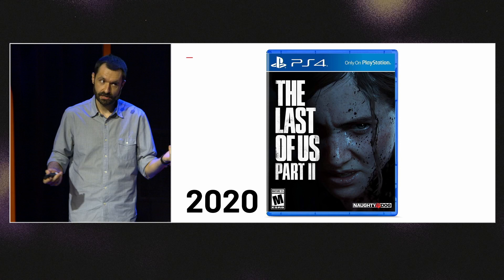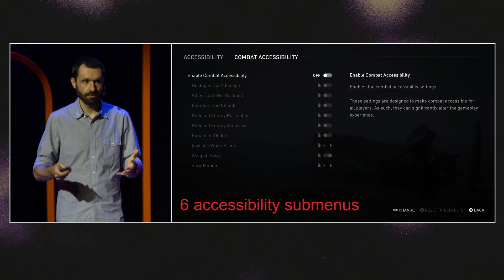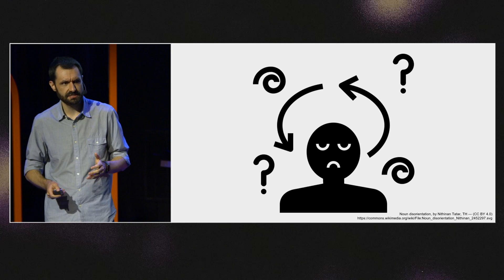We started prototyping and developing features for motor accessibility, hearing accessibility, and especially vision accessibility. We ended up with over 60 accessibility options — they no longer fit on one page — so we had six different accessibility submenus grouped by functionality. And since some players wanted to turn on all relevant options in one go, we had accessibility presets.